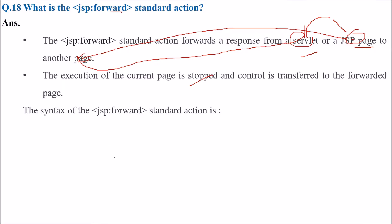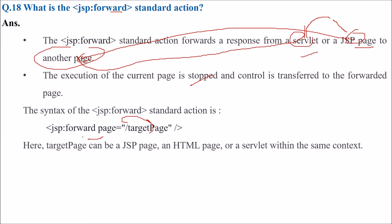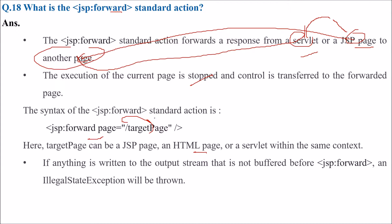The syntax would be something like: jsp:forward page, then this will be the target page. The target page can be a JSP page, an HTML page, or a servlet within the same context. If anything is written to the output stream that is not buffered before this JSP forward, an IllegalStateException will be thrown.